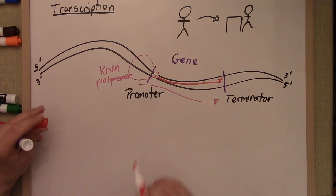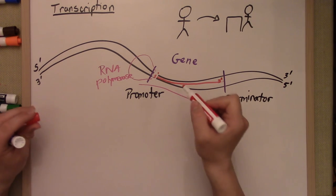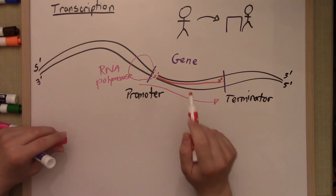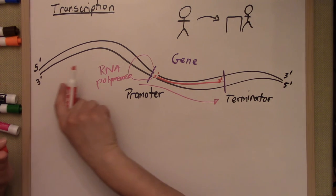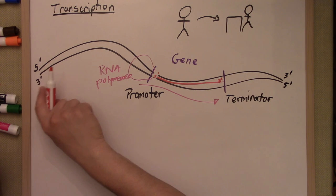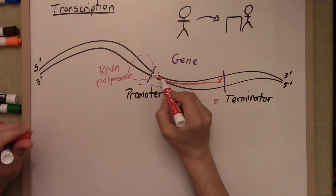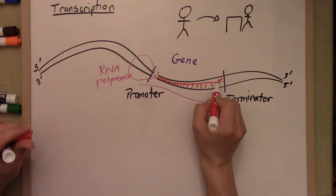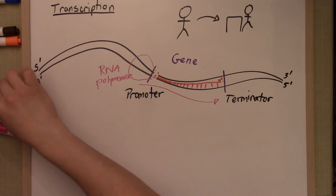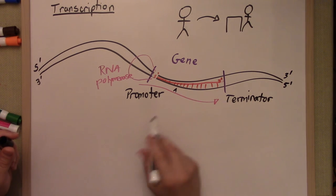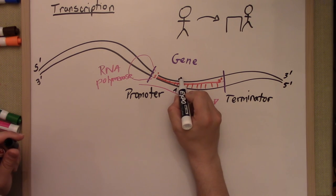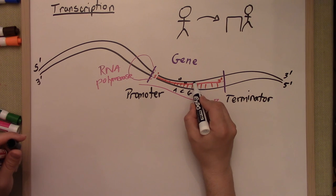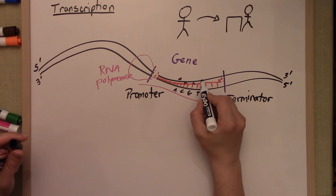RNA polymerase is going to build its RNA attached to the strand that has the opposite direction. So if this strand is five to three moving this way, it's actually going to build off of the strand that moving this way is the opposite — three to five — and that's the bottom strand. So RNA polymerase is going to match bases with the three-to-five strand. Anywhere there's an A, RNA polymerase matches it with a U. Anywhere there's a C, it matches with a G. Anywhere there's a G, it matches with a C. And anywhere there's a T, it matches with an A.